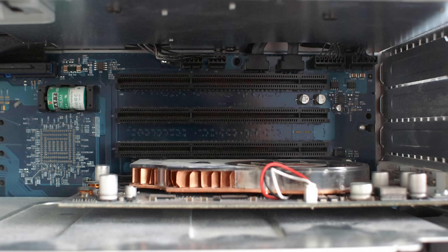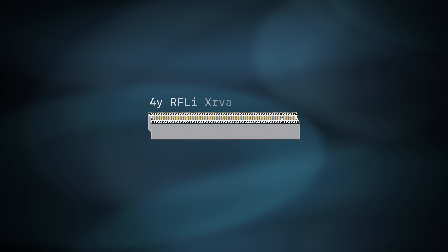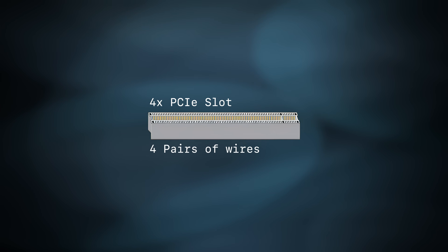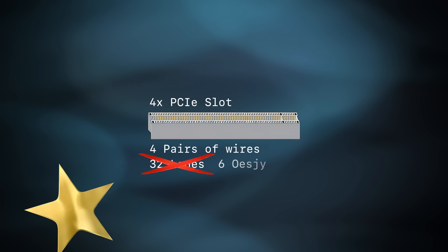As a refresher, PCIe uses pairs of wires for sending and receiving data. One pair equals one lane. A 4X PCIe slot has four pairs of wires, meaning it has — well, if you thought 32 lanes, that's because you were paying attention. The answer is four lanes.